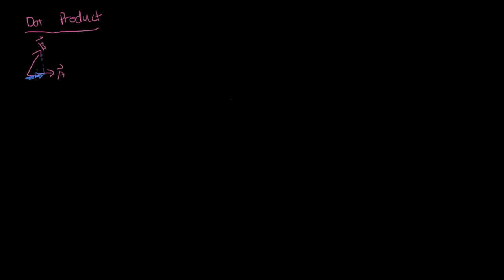One way to visualize the dot product is: imagine a sun shining straight down on the vectors — the dot product is related to the length of the shadow. You can also project vector A onto vector B by putting the sun on the other side. Either way, you end up with the same number. The dot product is not sensitive to the order.